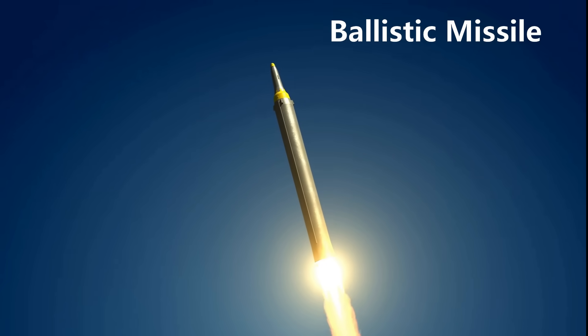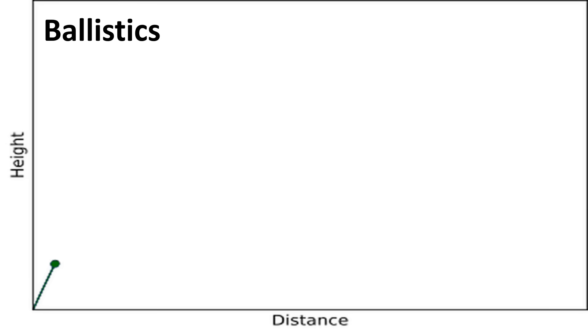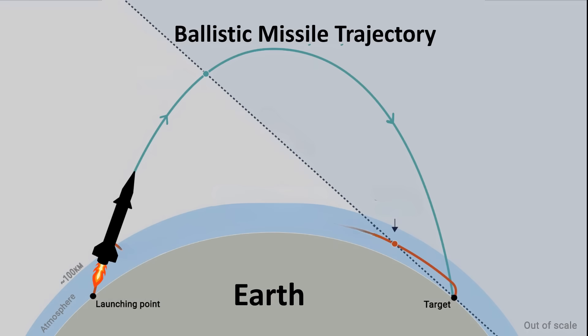When you hear the term ballistic missile, you might wonder what the word ballistic actually means. Ballistic is a physics term. Imagine throwing a ball as far as you can. After it leaves your hand, it follows a certain path through the air. A missile which follows almost a similar path is called a ballistic missile.